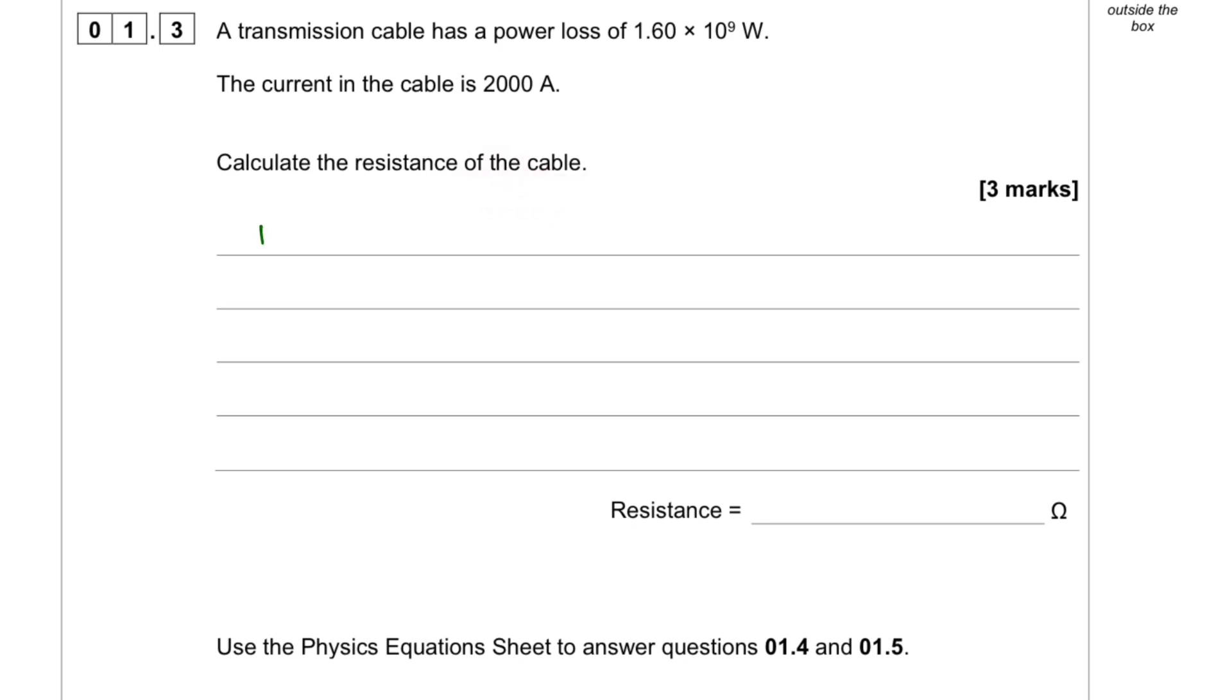We can say we know the power, which is 1.6 times 10 to power 9 watts. And the current is 2000 amps. And we can use the formula P equals I squared R, where we can make R the subject. So that would be P over I squared. And so we can populate that with 1.6 times 10 to power 9 over 2000 squared. And if we plug that into the calculator, we should get 400 ohms. So that would be the resistance.